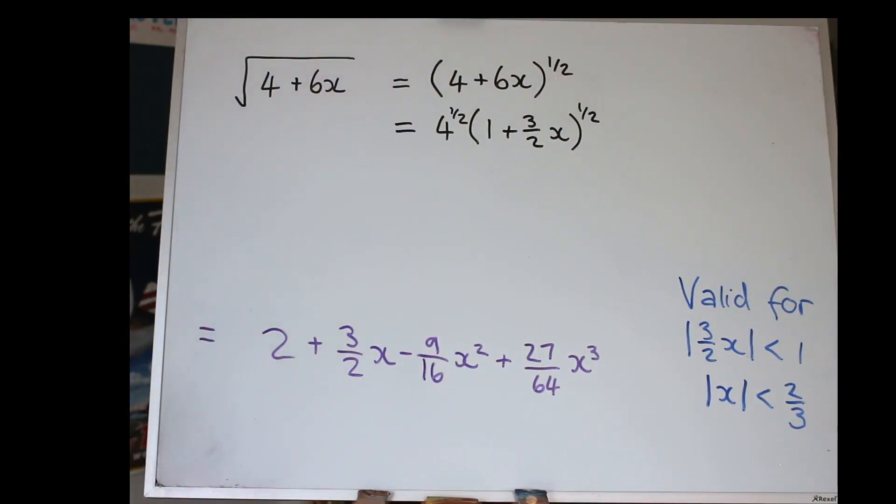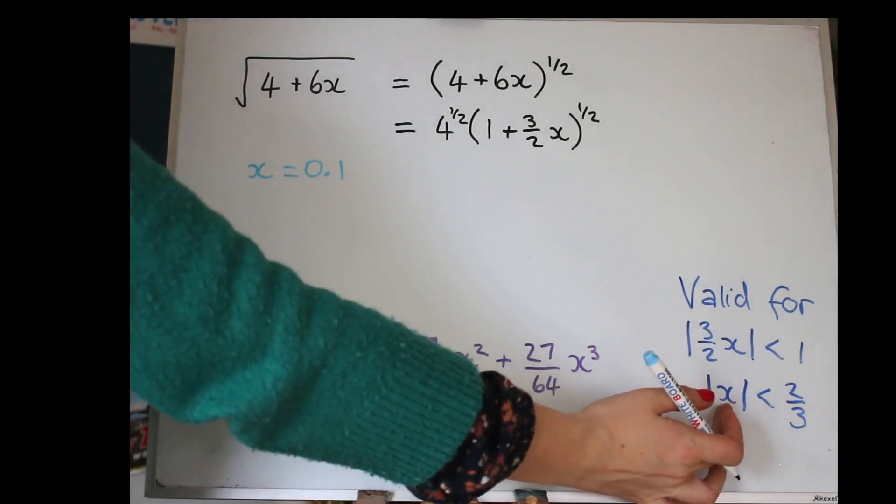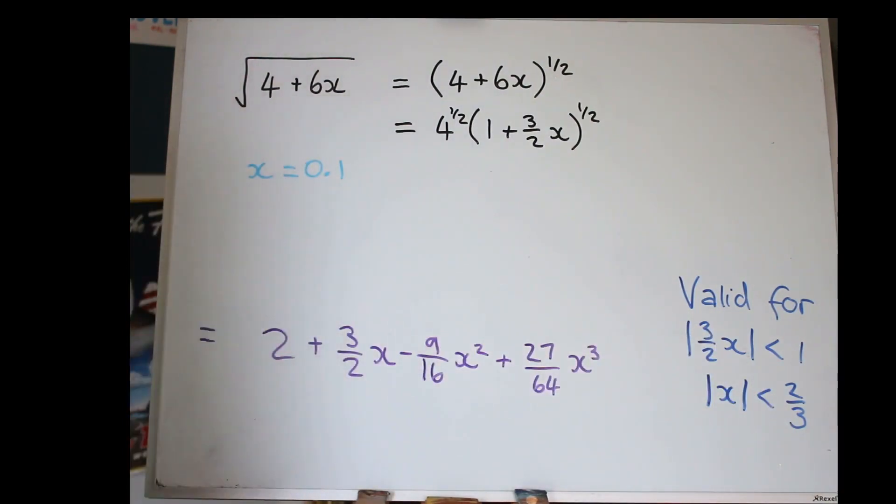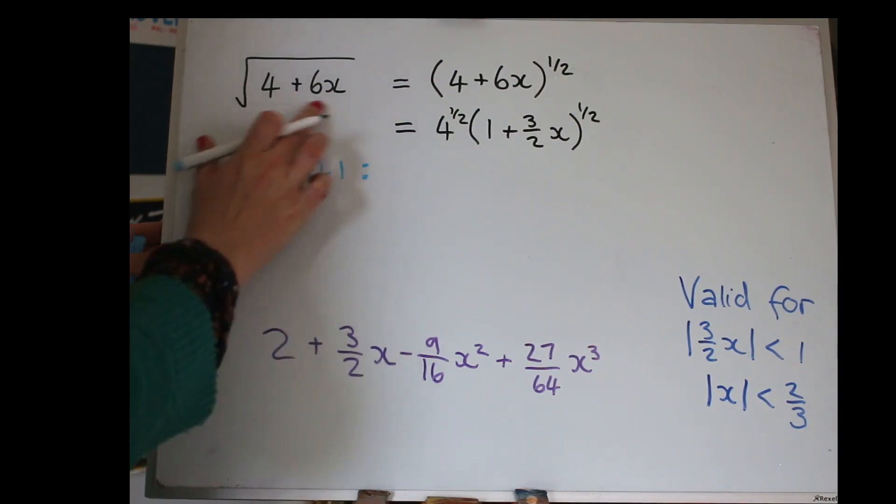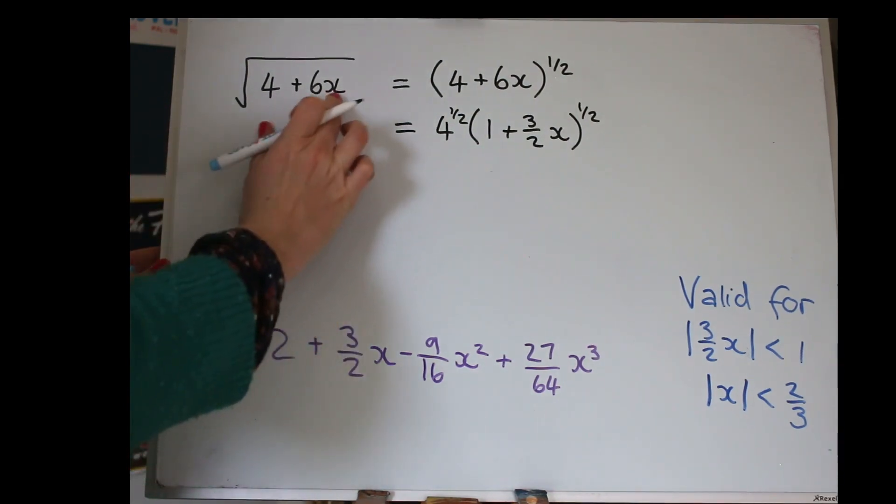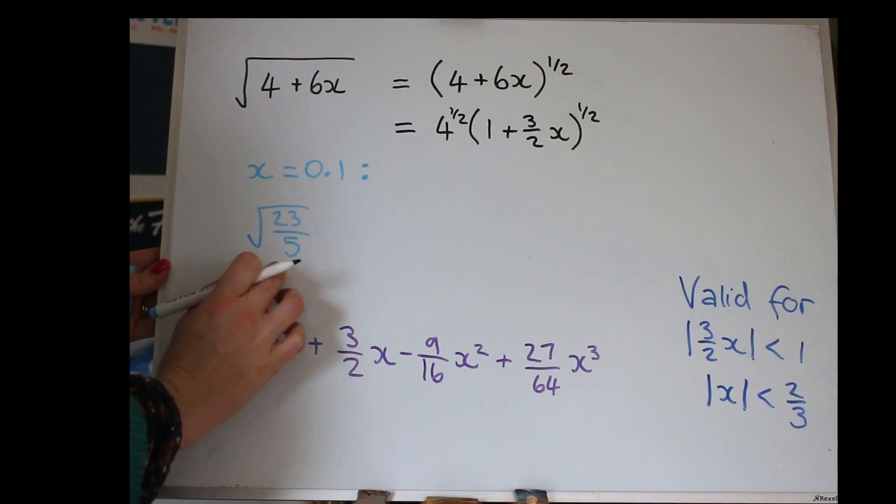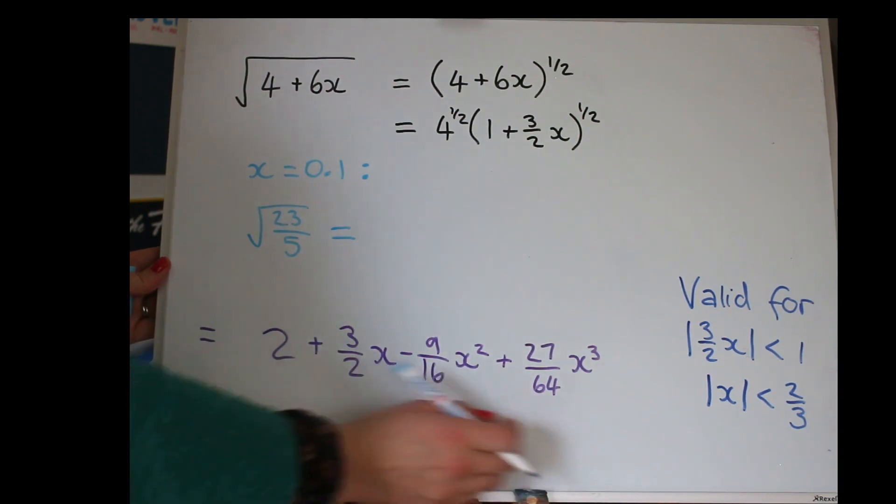So, just to show you a quick application of this. Let's see what happens when we give X a value. So, let's take X is 0.1. So, remember, it's only valid when X is less than 2 thirds. Now, 0.1 is less than 2 thirds, so we're OK. This will work. So, when X is 0.1, then in here, 4 plus 0.6 gives us 4.6. And as a fraction, that's 23 over 5. So, when X is 0.1, then all of that will be root of 23 over 5.